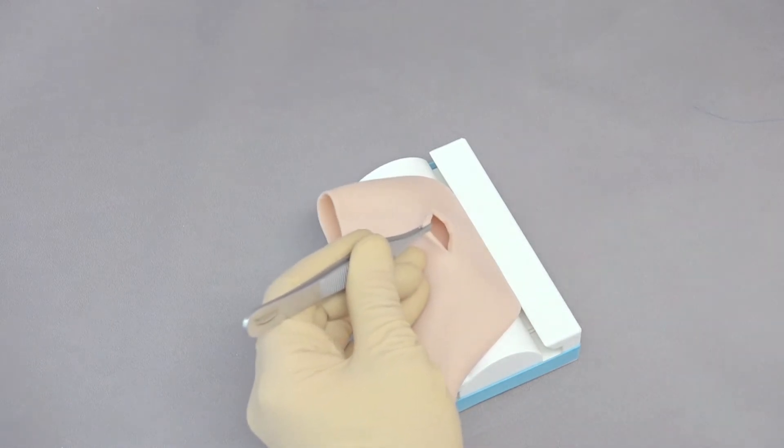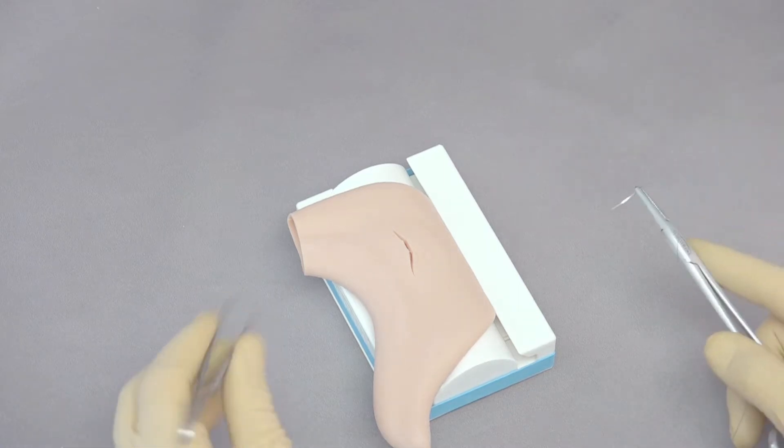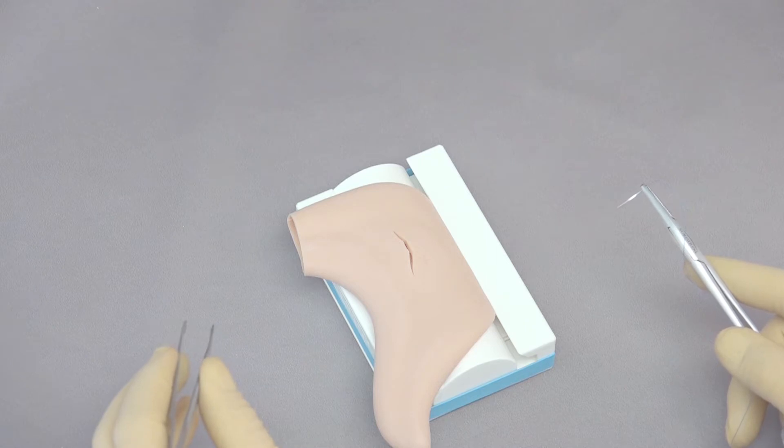We can clean out, explore the stomach, do whatever we need to do, and then we're going to close the stomach. Now in the vast majority of our species, a single layer closure is effective in closing the stomach. So we can just do a simple continuous through and through suture, in order to practice that.